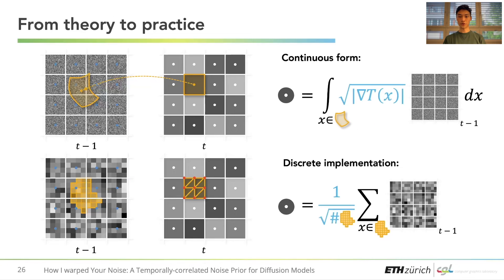Now in reality, as we show in our paper, an additional Jacobian term is needed to account for both the local stretching of the warping and to correct the variance of the final sample. We call the continuous formulation above the noise transport equation.